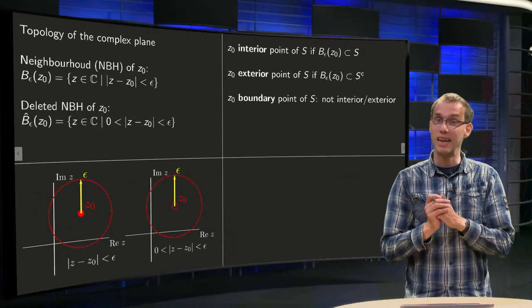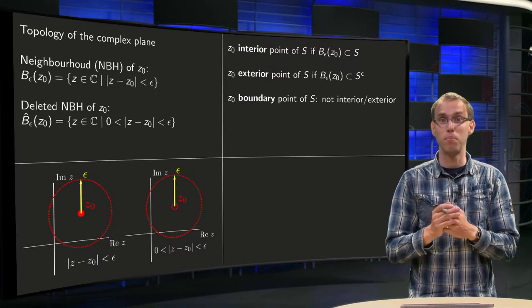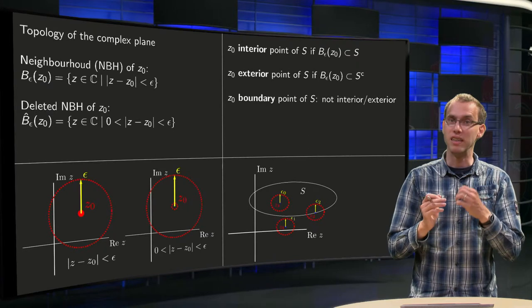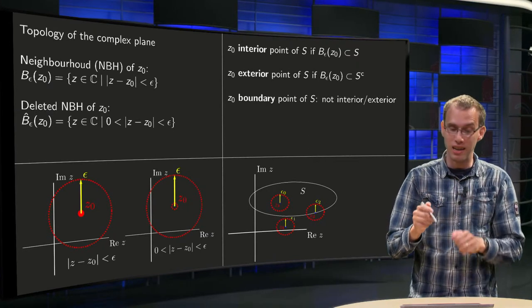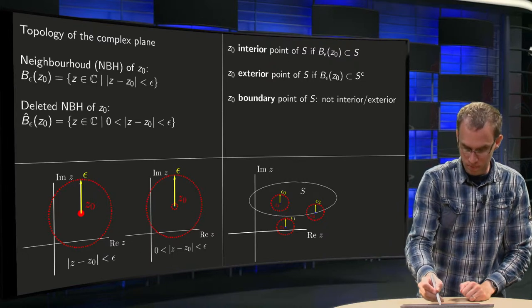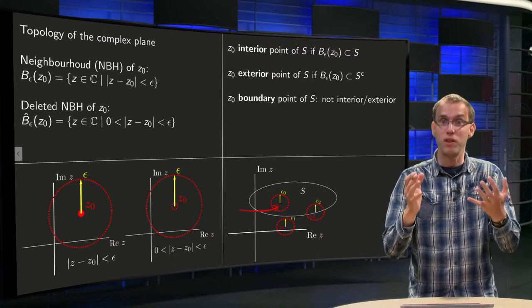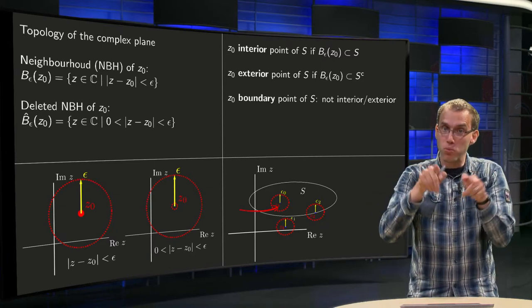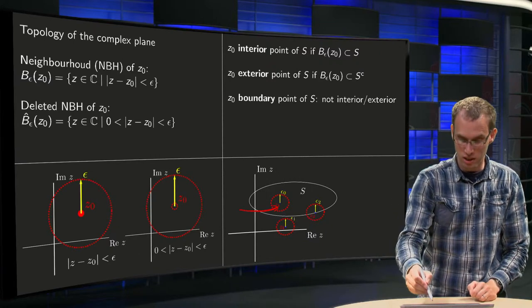Now, what is an interior point of a set? Well, a point z₀ is an interior point of a set S if you can find a neighborhood around z₀ which is entirely in S. So here we have our z₀, which is intuitively clear is in S, and you can make a small disk around it which is entirely contained in S, as you see over here.